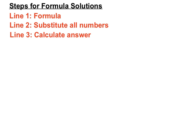Line 1, we'll put the formula for that particular shape. Line 2, we'll look to substitute all the numbers from the questions into the right spot in the formula or just under the formula. Calculate the answer and then we'll check our units carefully.